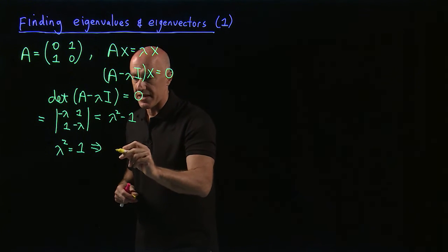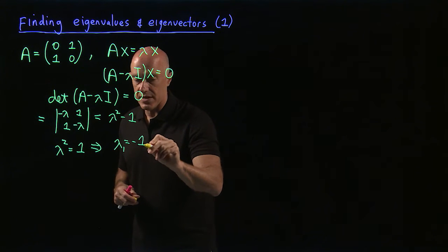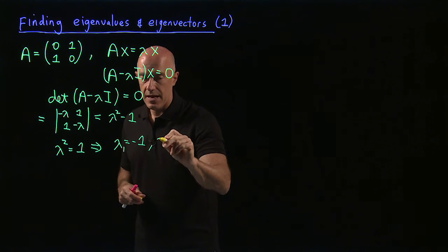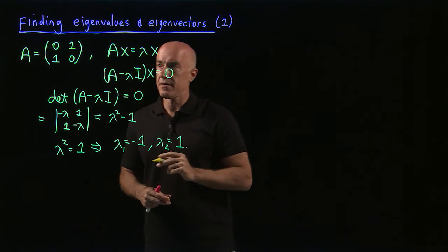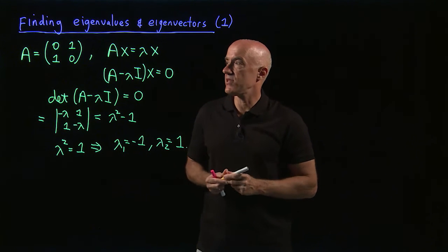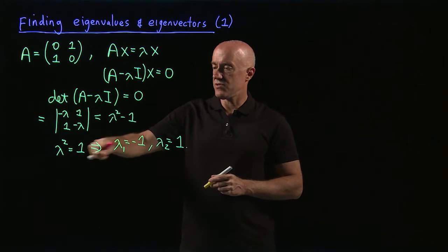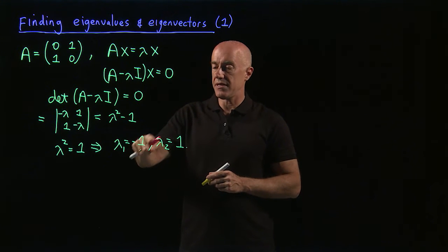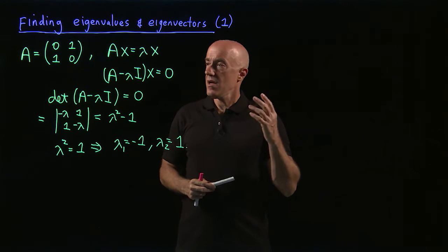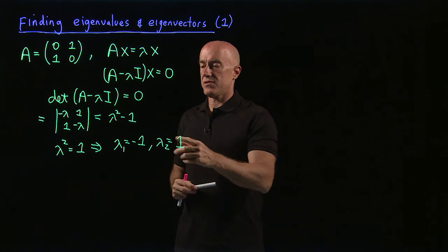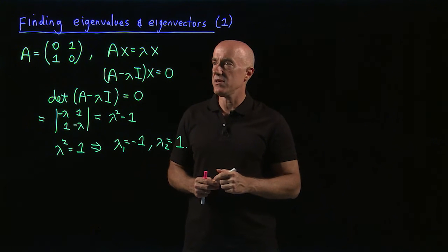So we have two eigenvalues: λ₁ equal to minus 1, and λ₂ equal to plus 1. This matrix A = [[0,1],[1,0]] has two eigenvalues, minus 1 and plus 1. We want to find the eigenvectors, since each eigenvalue has an associated eigenvector.